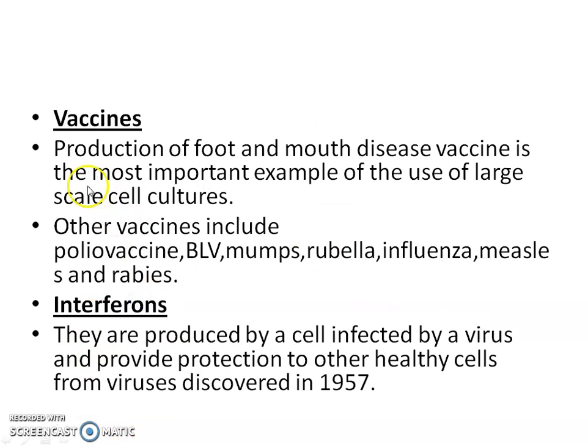Vaccines are produced in large-scale cell cultures, including polio, mumps, measles, rabies, and foot and mouth disease. The production of FMD (foot and mouth disease) vaccine is the most important example of large-scale cell culture. Other vaccines include polio, bovine leukemia virus (BLV), mumps, rubella, influenza, measles, and rabies.